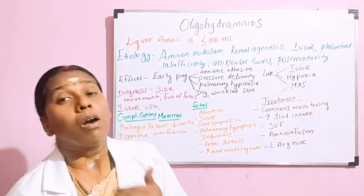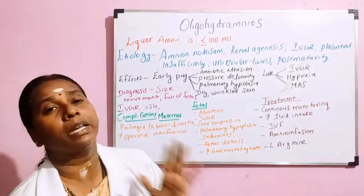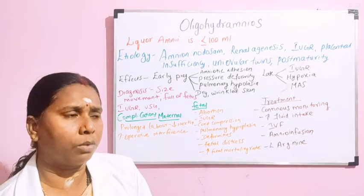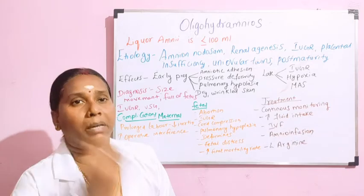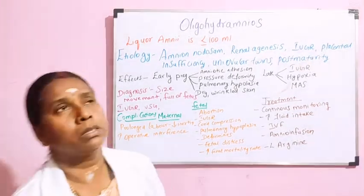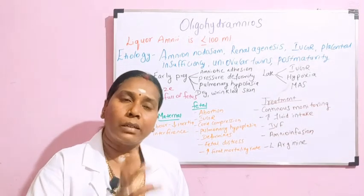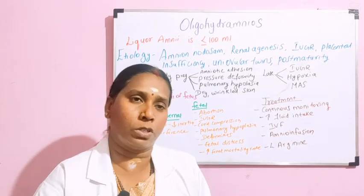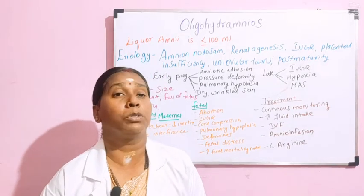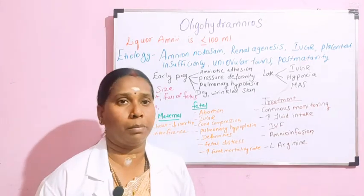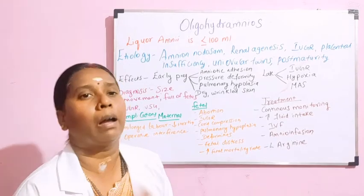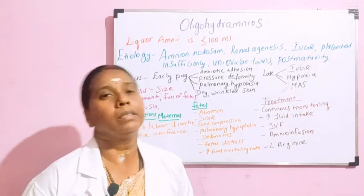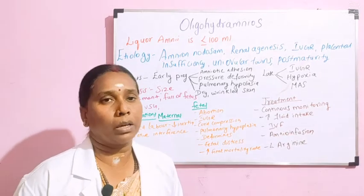Next we discuss complications of oligohydramnios, divided into maternal and fetal. Maternal complications are less compared to fetal complications. The maternal complication includes prolonged labor: when there is oligohydramnios, there is decreased uterine inertia — the contraction force is less — so the woman will have prolonged labor, which may require operative deliveries such as vacuum, forceps, or caesarean section.